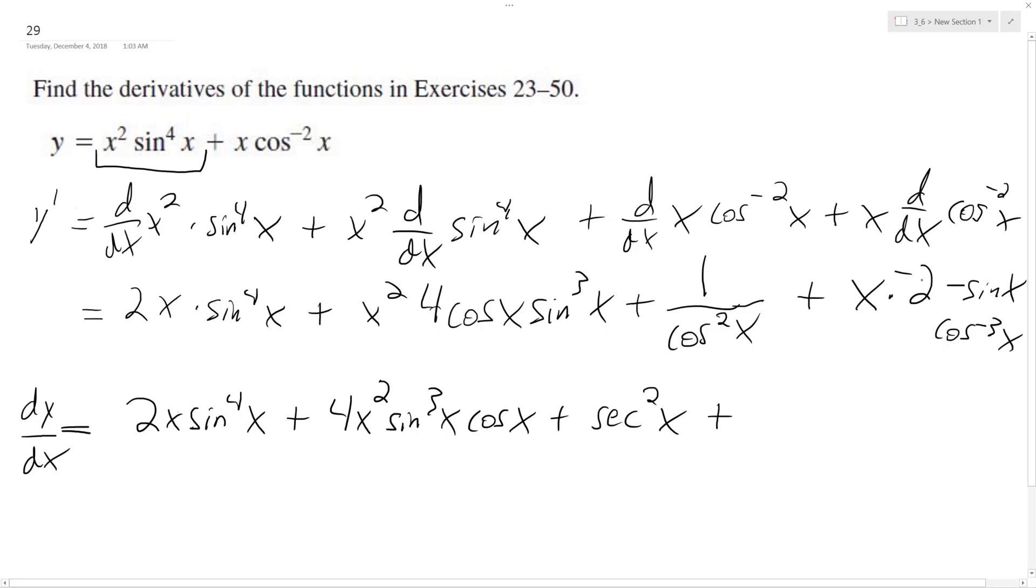plus 2x (the two negatives cancel out), 2x sine x all over cosine raised to the third x, because that was a negative.